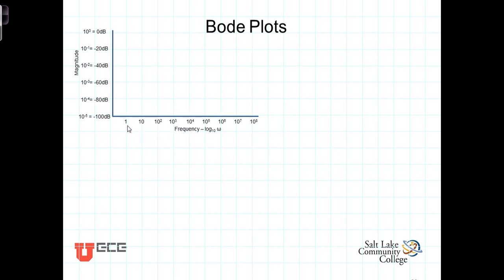So at this point here we've got 1. Coming over this distance is 10 times 1, or 10. This distance here is now 10 times 10, or 100. Then 1,000, 10,000, 10 to the 5th, 10 to the 6th, and so on.